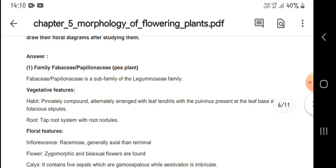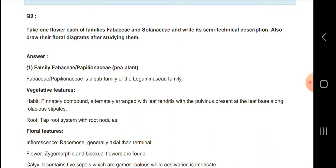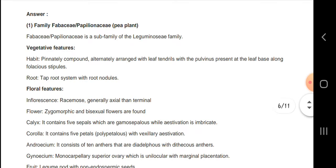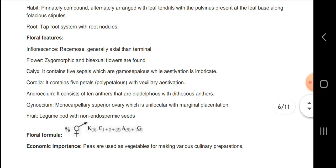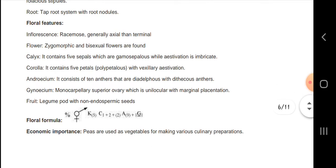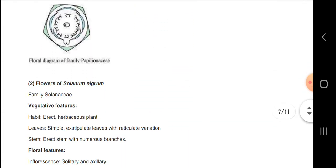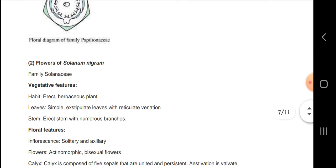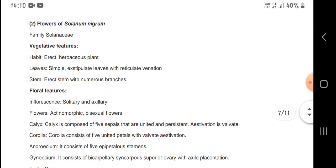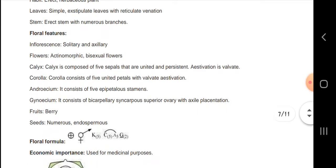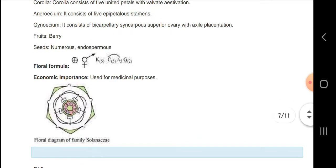Let us know about one flower from each family. Floral features include inflorescence, flower, calyx, corolla, androecium, gynoecium, and fruit. Here they have given the diagram of floral diagram of the family Papilionaceae and flowers of Solanum, Solanum nigrum family Solanaceae. This is the diagram of the Solanum seed.